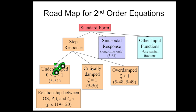Critically damped systems have zeta equals 1. For underdamped, you have zeta less than 1 but greater than 0. Overdamped systems have zeta greater than 1, and they are the slowest responding second-order systems. Those are given by the equations shown here.